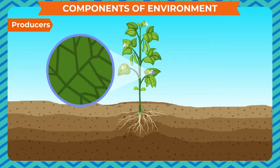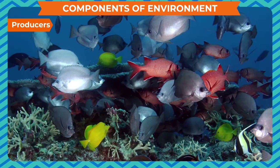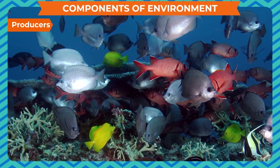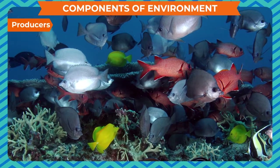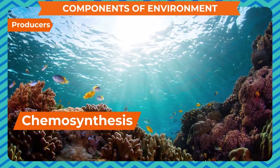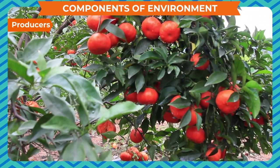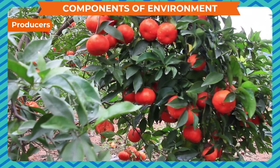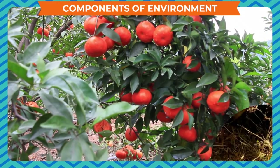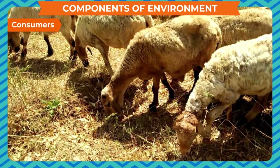Producers are also known as autotrophs. Green plants in our biotic environment are producers as they make their food through the process of photosynthesis in the presence of sunlight. Some producers such as bacteria also make food without the aid of sunlight; this process is called chemosynthesis. Producers are mainly the first stage of the food chain because they produce food for all living beings.